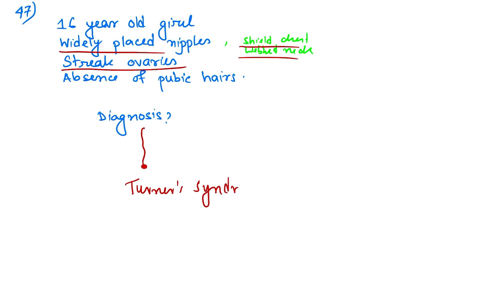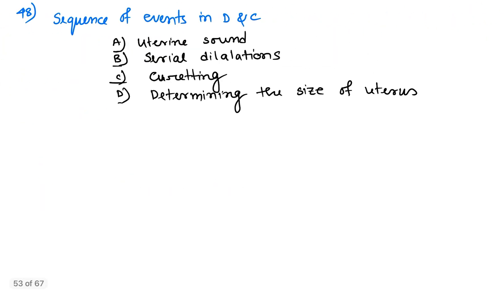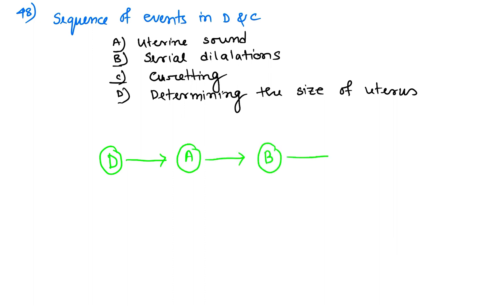Question number 48: sequence of events in dilatation and curettage (D&C). First, determining the size of the uterus; next, uterine sound; then serial dilatation; and finally curettage. That is the sequence of events in the operation of dilatation and curettage.